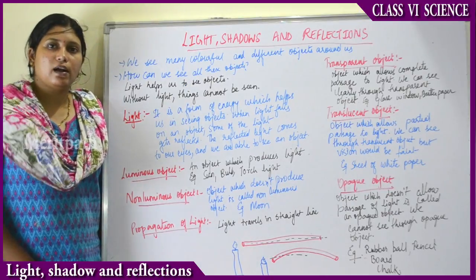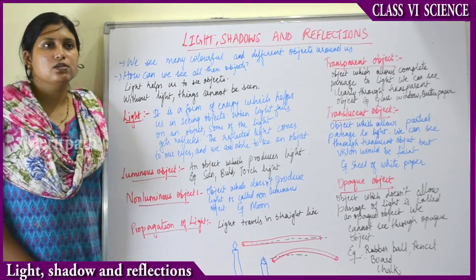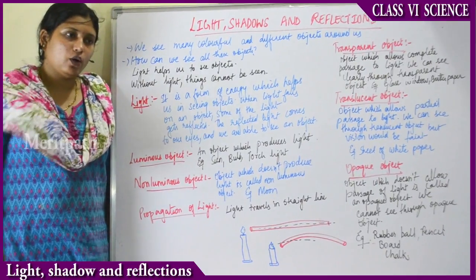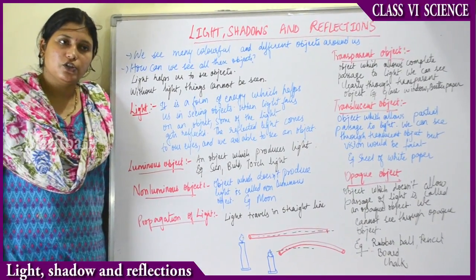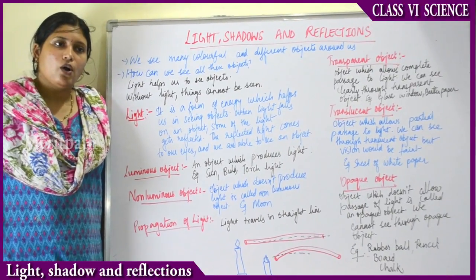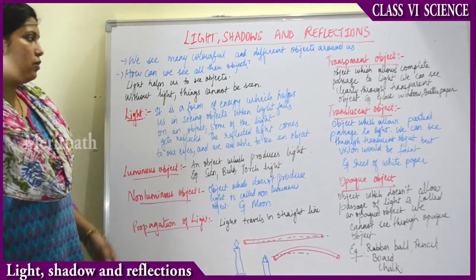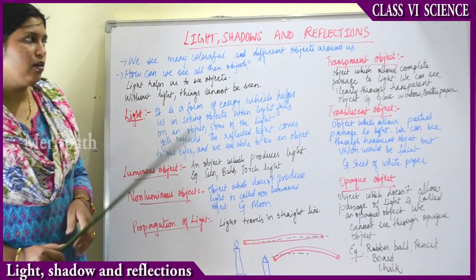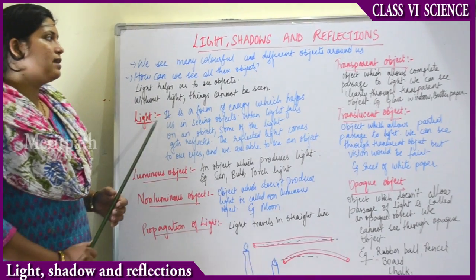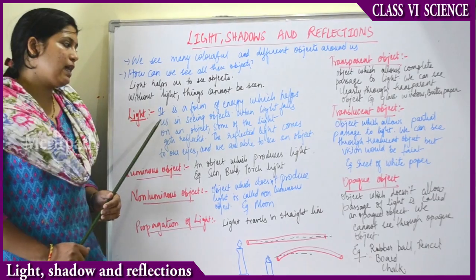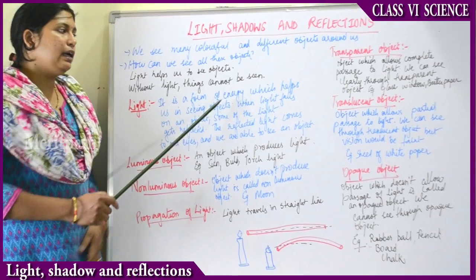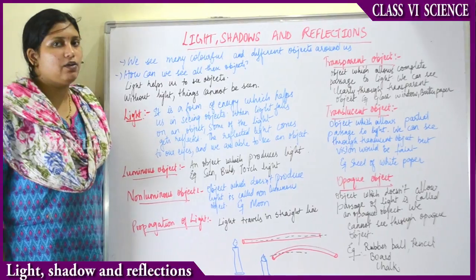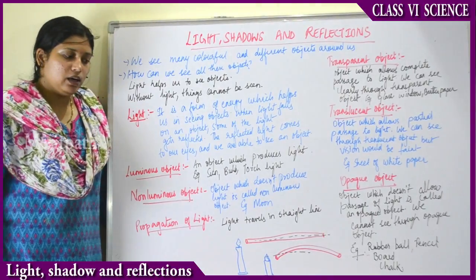That is the reason when there is darkness or a power cut, we will not be able to see objects. So whenever it is dark we have to switch on a torch, use an inverter or generator, or light a candle. Without light, things cannot be seen. So light is very important. Light is a form of energy which helps us in seeing the objects.